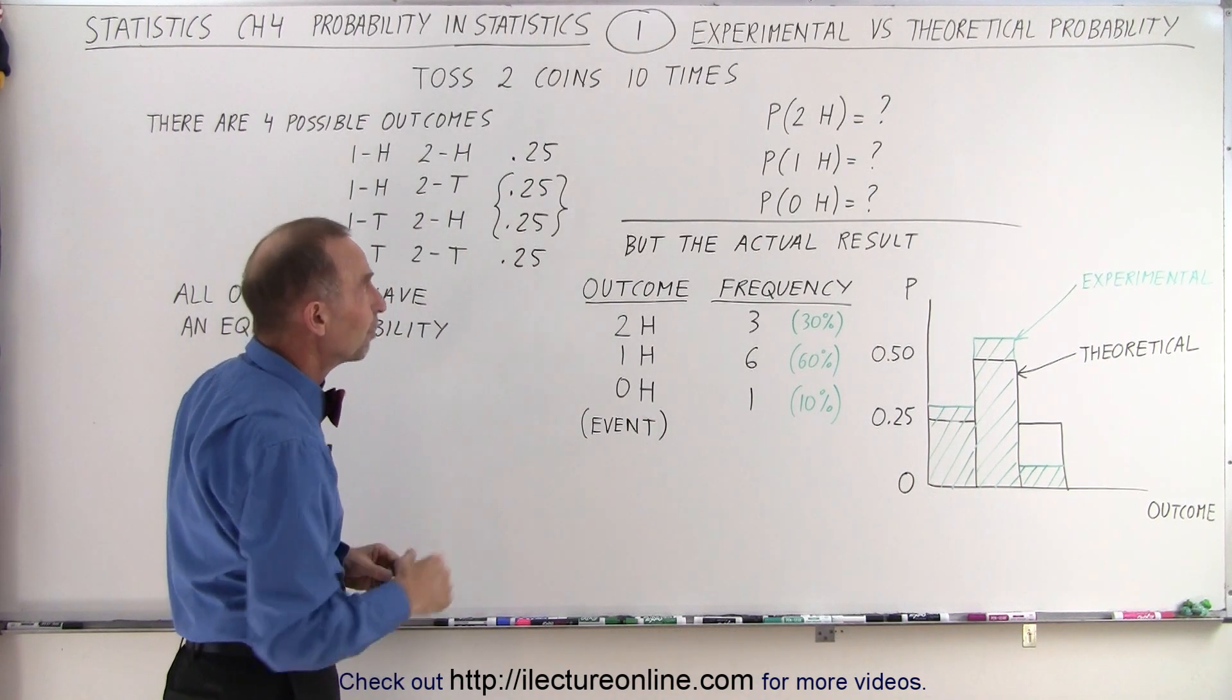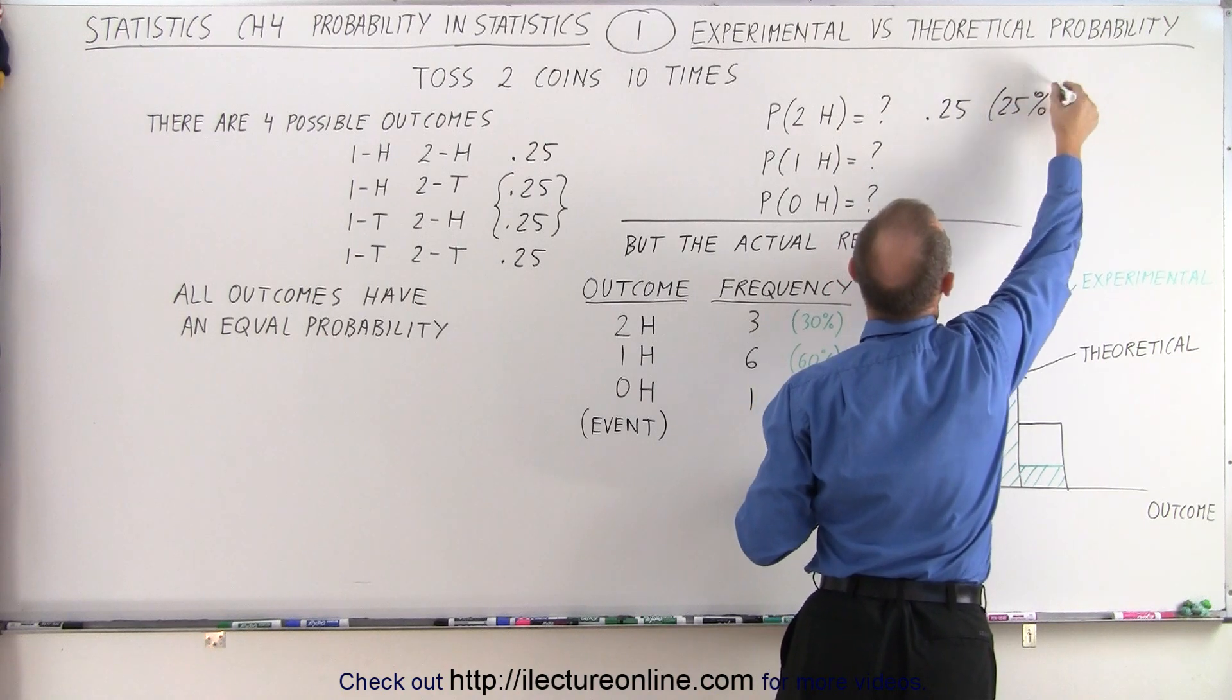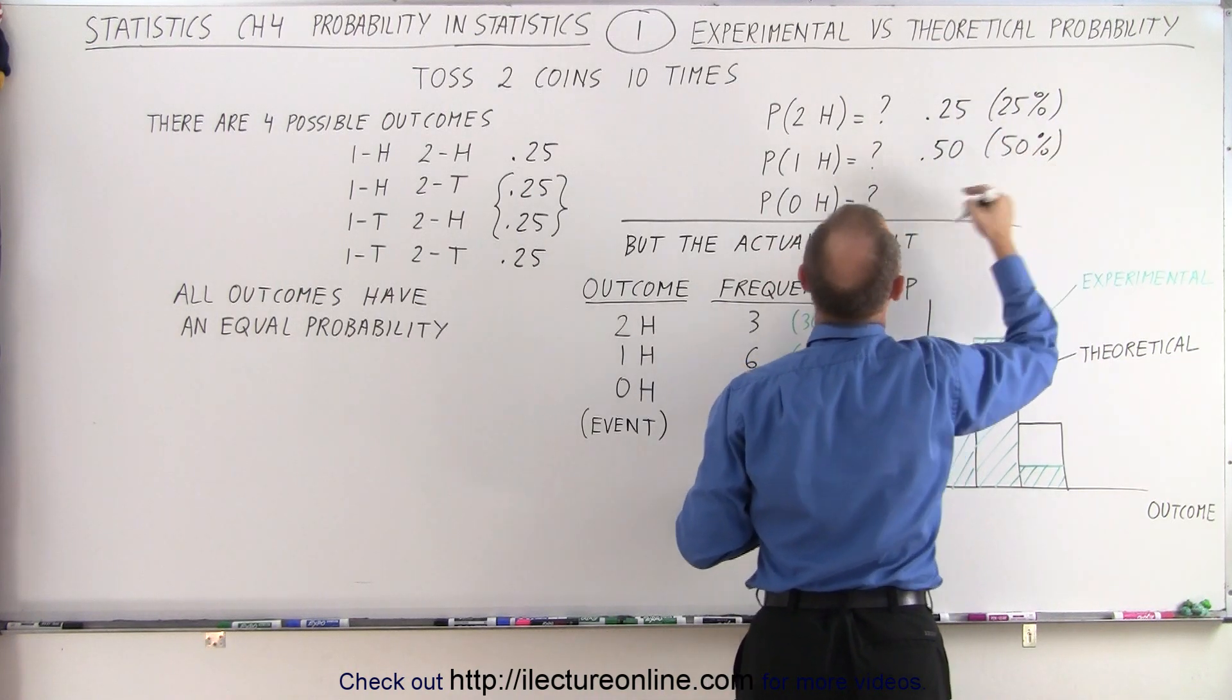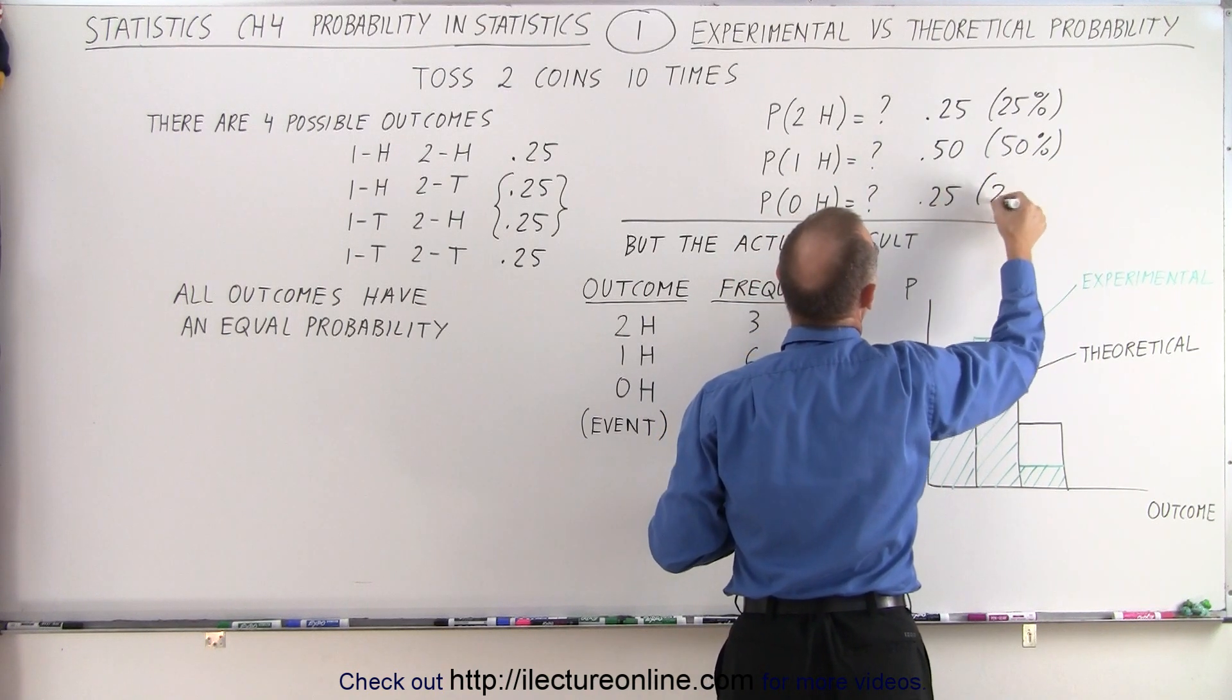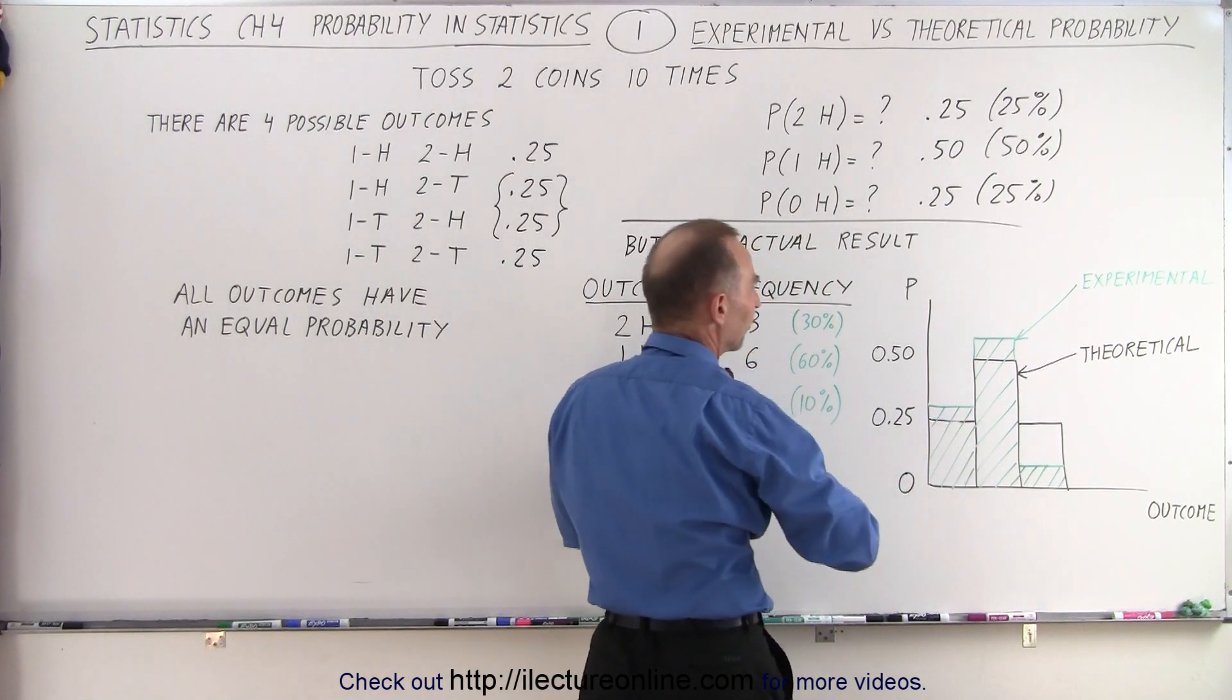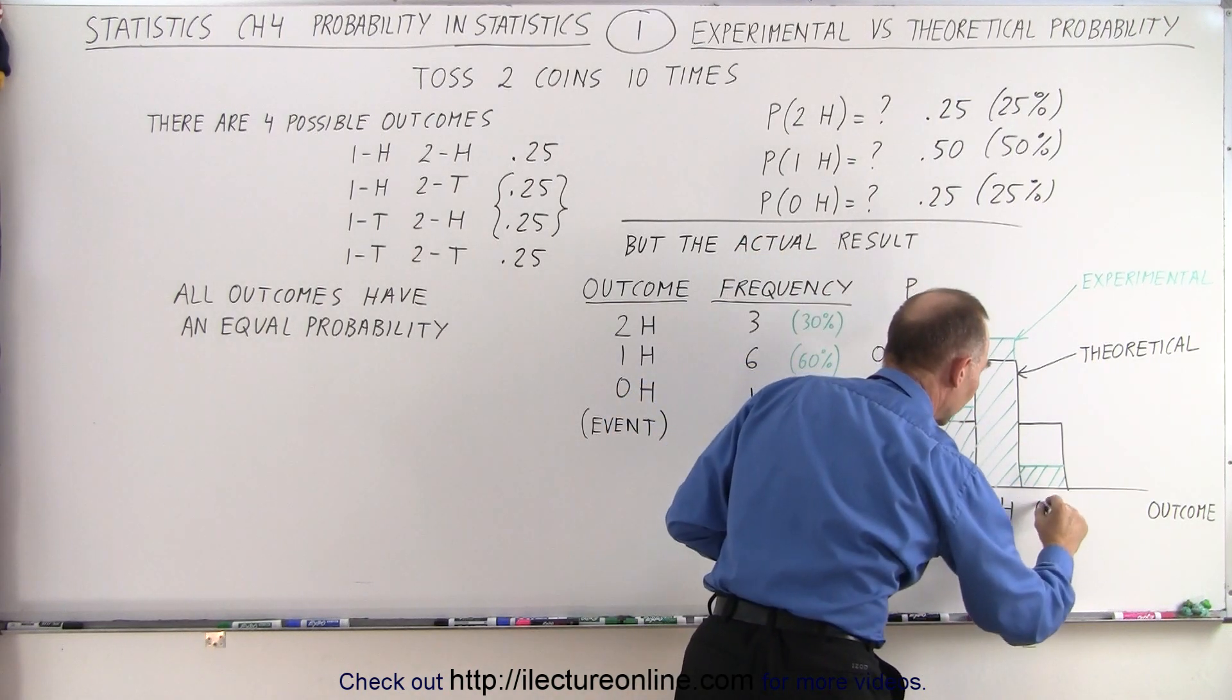So from a theoretical perspective, we can say that the probability of getting two heads is 0.25, which is 25%. The probability of getting one head, either one or the other coin, that's 0.50, which is equal to 50%, and the probability of getting no heads with two coins, that's also 0.25, or 25%. Now, we graphed the theoretical probability here, 25% for, and of course, I should call that two heads. One head, the probability there is 50%, and zero head, the probability again is 25%.